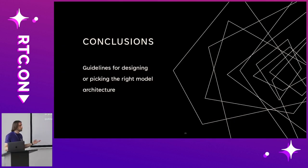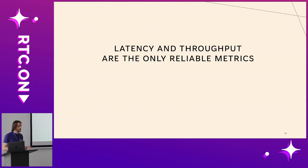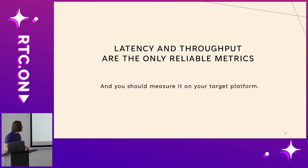So what are the conclusions, or guidelines, for you to either design or pick the right model? The most important one is: latency and throughput are the only reliable metrics. Whether you're an ML engineer designing a model architecture or a software engineer browsing and comparing models, if you care about efficiency, you should measure the latency or throughput on your target platform — because that's the only reliable way to do it.